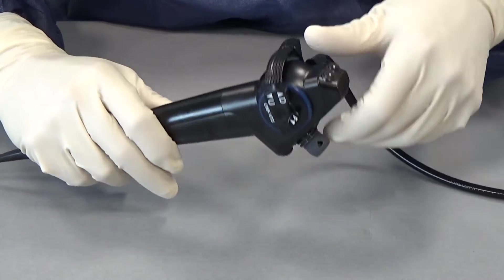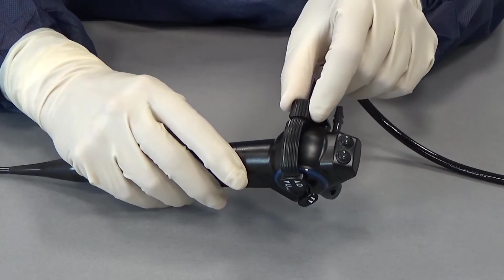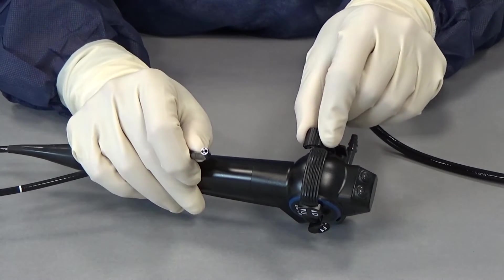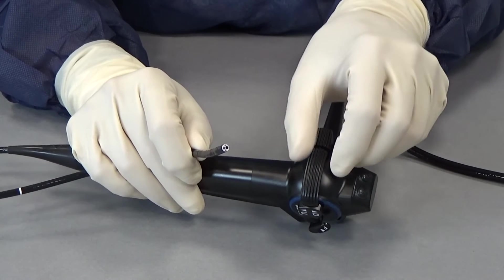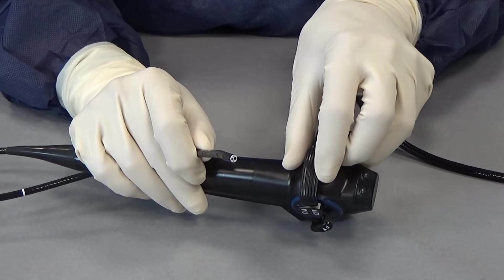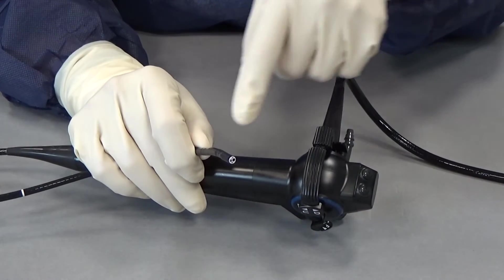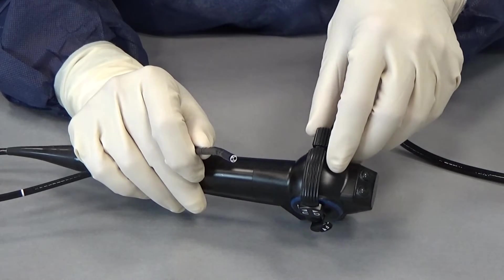We also have two levers as you can see here. This is a small lever and it controls this endoscope like here, and the other lever goes exactly in the 90 degrees different direction as you can see here. That means with these two levers you can go all four ways with the tip of your endoscope.